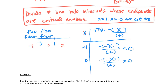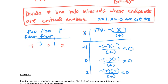Using test point x = 2: (2 − 1) is positive, (2 + 3) is positive. So we have negative times positive times positive, divided by positive — that's negative divided by positive, which is negative. The derivative is less than 0 on the interval from 1 to infinity, so the function is decreasing there.